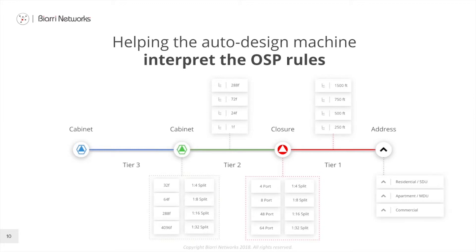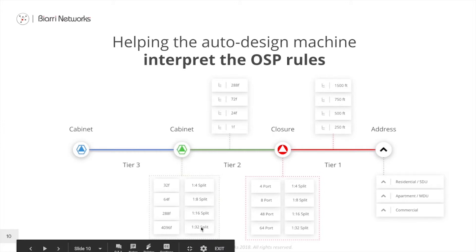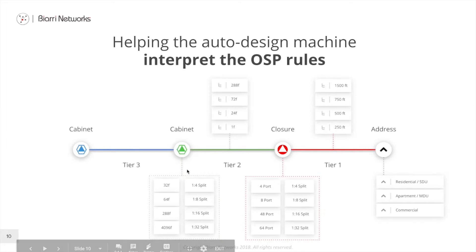In a centralized split architecture, you might place a 1x32 splitter at the Tier 2 cabinet. You could also create a distributed cascade split by placing nine 1x4 splitters in the cabinet and then using a 1x8 splitter in the Tier 1 closure. Or you could just put the 1x32 splitter in the cabinet to have a fully centralized split design.